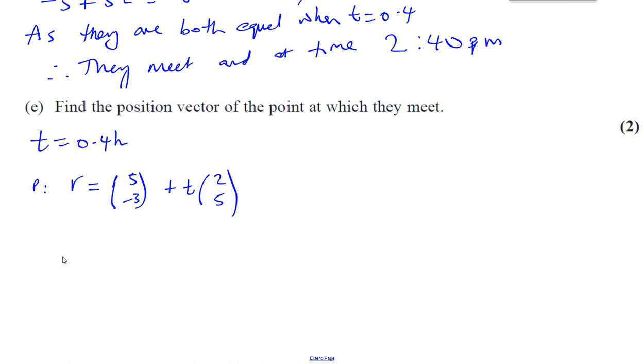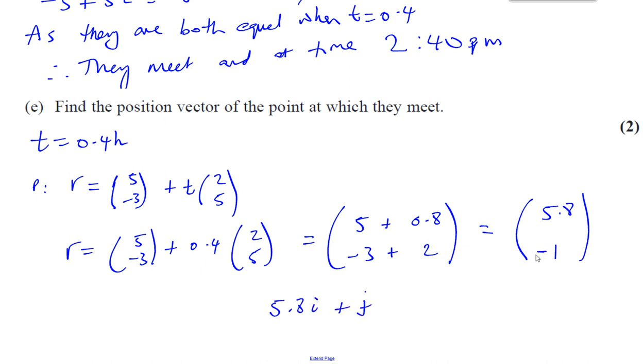The position vector at the point at which they meet will be when you substitute T equals 0.4 into this. So R equals 5 and minus 3 plus 0.4 times 2 and 5. So you're going to have 5 plus 2 times 0.4, which is 0.8, and you're going to have minus 3 plus 5 times 0.4, which is 2, which will give you 5.8 and minus 1. So 5.8i minus j is the position vector where they'll meet.